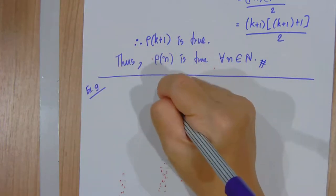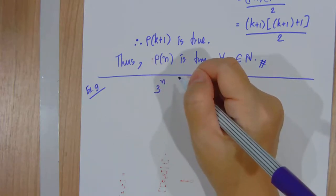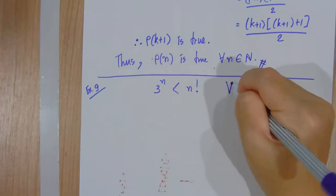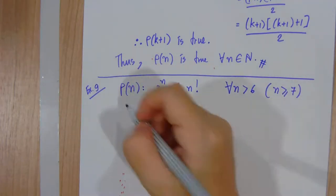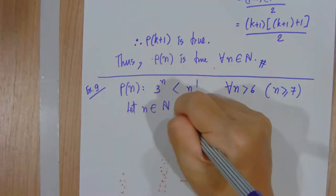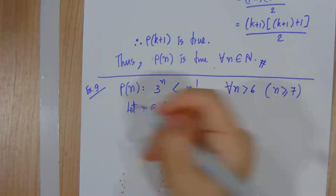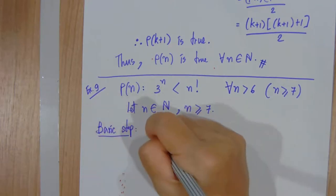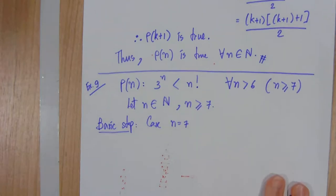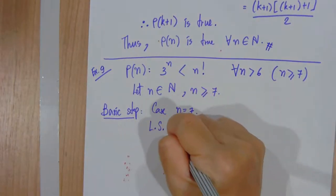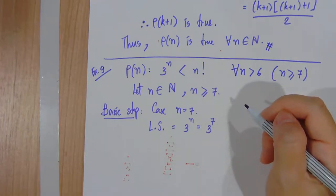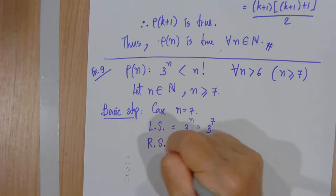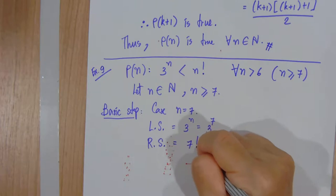We can also prove inequalities. For example, 3^n < n! for n greater than 6, meaning n starts at 7. So P(n) is the sentence 3^n < n!. We let n be any natural number with n ≥ 7, and the basic step starts from the case n=7. We prove the left-hand side 3^7 and the right-hand side 7!. 3^7 equals 2187.